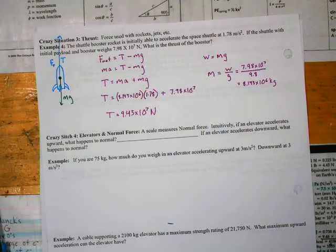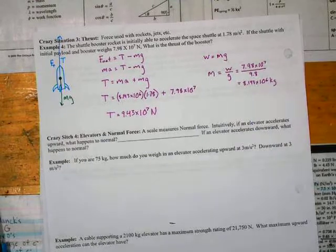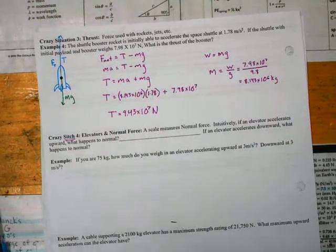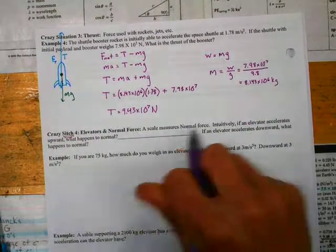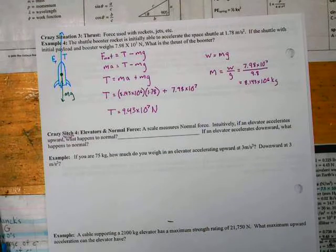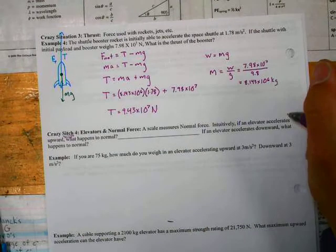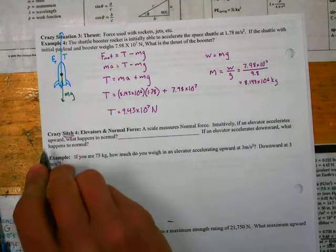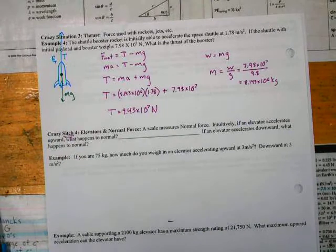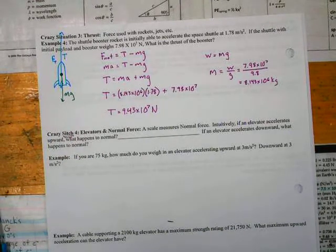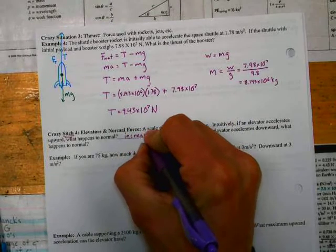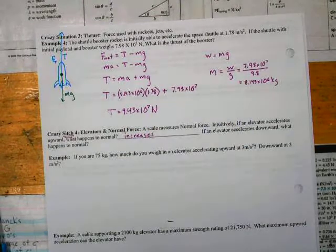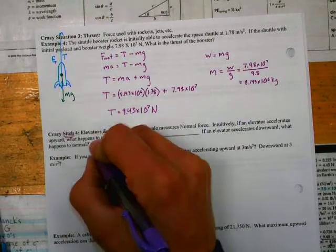Back to the physics. Crazy situation number four. Oh, I used a little slang. Crazy sitch number four. Elevators and normal force. A scale measures normal force. You guys already know that. Intuitively, if an elevator accelerates upward, what happens to the normal? Well, you'll feel that scale push on your feet, so normal increases. If the elevator accelerates downward, what happens to normal? It decreases.